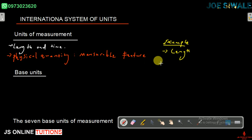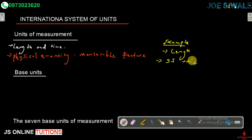Scientists use these types of measurements, referred to as the SI units. The reason why SI units are used is to prevent confusion around the world. That covers units of measurements — let us now look at the base units.